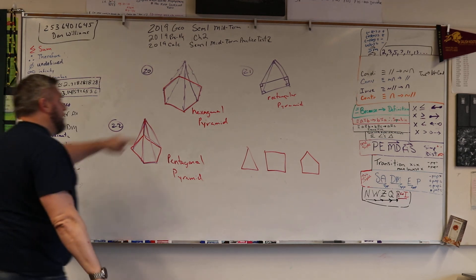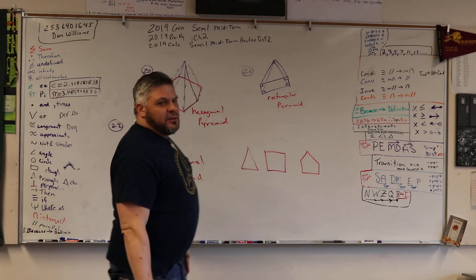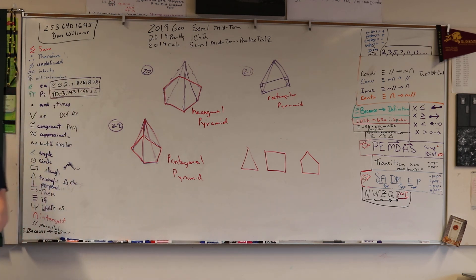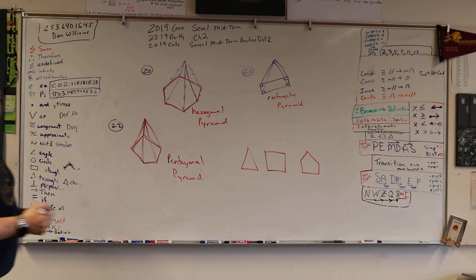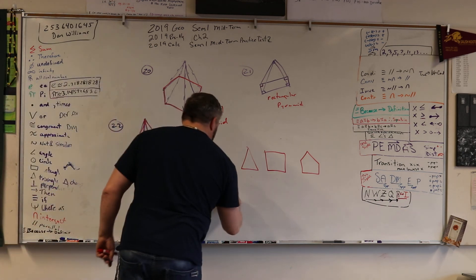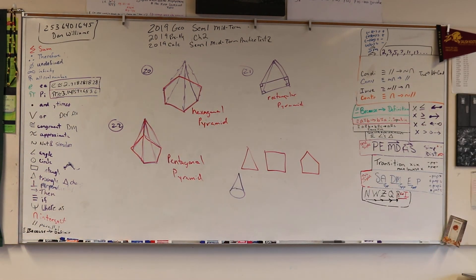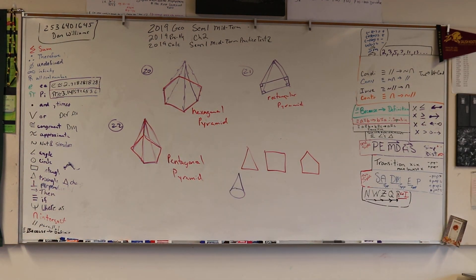Okay. We got hexagon, rectangular, pentagon. Okay. It's all based on what the shape is. If it's a circle, what do we call it? Cone. Cone. Good job. Okay. All right. And that's basically talking about the shapes.